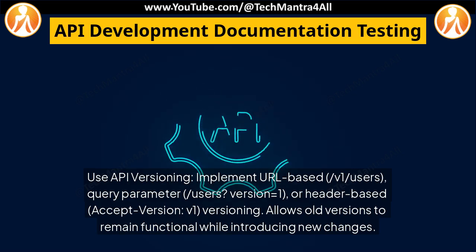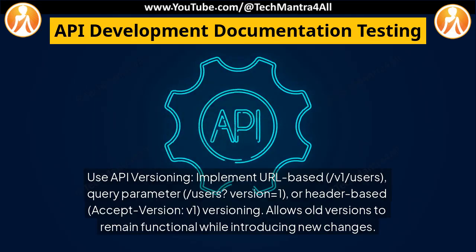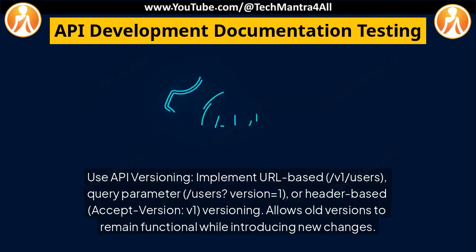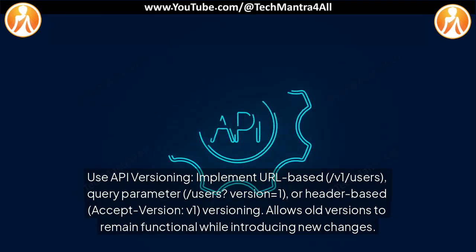Use API versioning: implement URL-based versioning such as /v1/users, query parameter versioning such as /users?version=1, or header-based versioning such as Accept-Version: v1. This allows old versions to remain functional while introducing new changes.